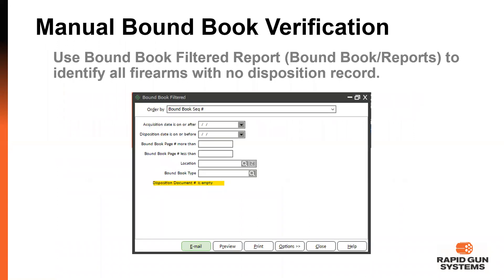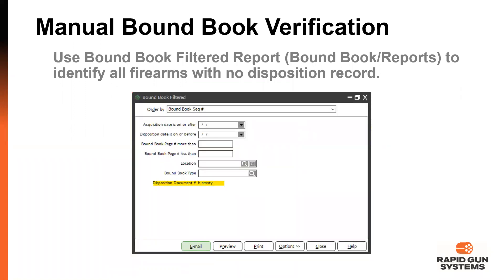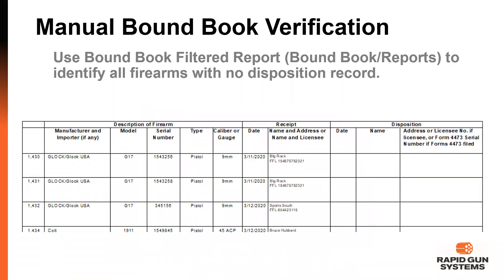Now let's talk about doing your firearms. For firearms, we generate a report differently. We go into the Bound Book Report — found under Bound Book Reports > Filter Bound Book Report. Once we open this up, we add a filter at the bottom that says 'disposition document number is empty,' meaning when we run this report it shows all firearms that are not disposed — in other words, they should still be in your inventory. Print this out, and you'll see the manufacturer, model, and serial number as the primary fields you need.